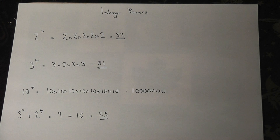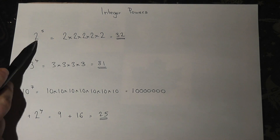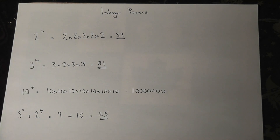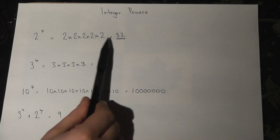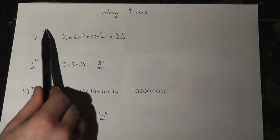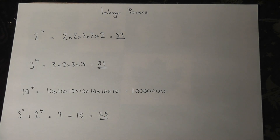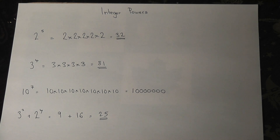To summarize: when you have a base number to a power, you multiply that number by itself that many times. And that's all there is to integer powers.